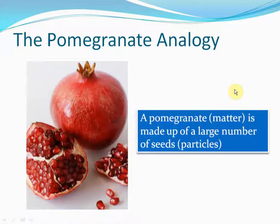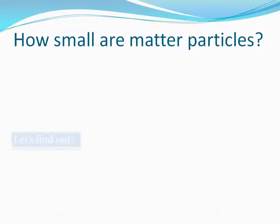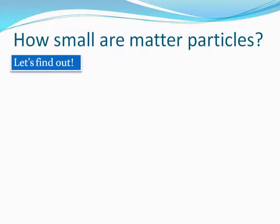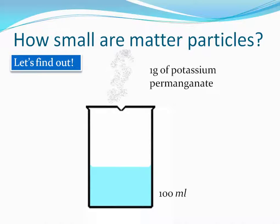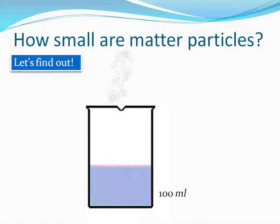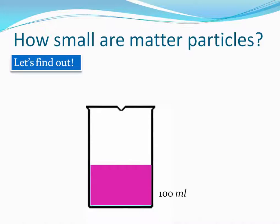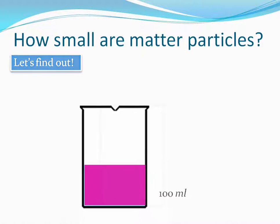Now, we've just learned that matter consists of particles. But how small are these particles? Or are they big particles? Again, we can conduct an experiment to find out how big or small the particles of matter are. In this experiment, let us first take 100 milliliters of pure water. Now let us add 1 gram of potassium permanganate to this water. The quality of potassium permanganate is that its solution is pink in color — something like this. So when you add potassium permanganate, the solution immediately turns pink.